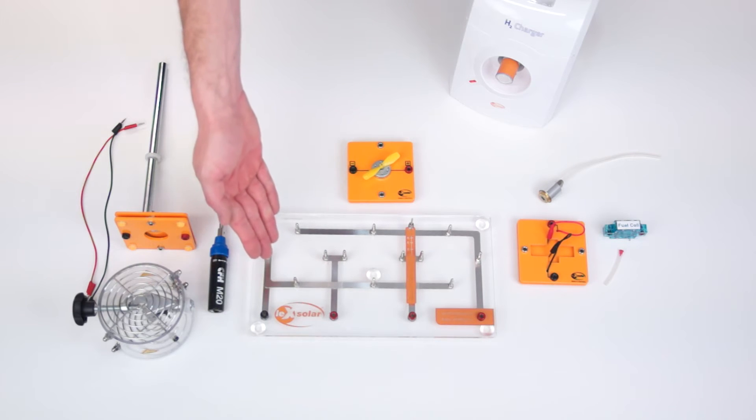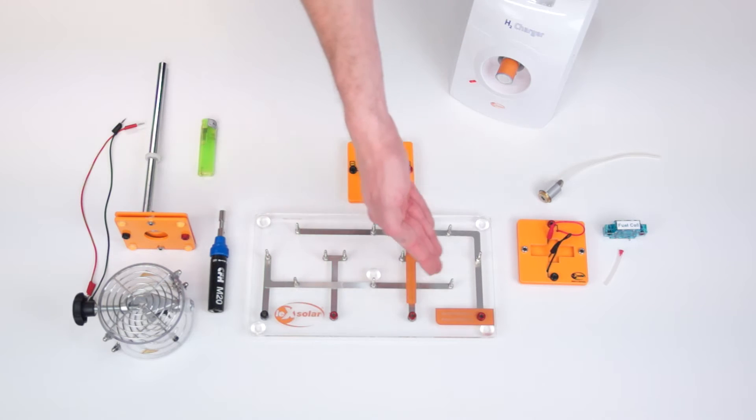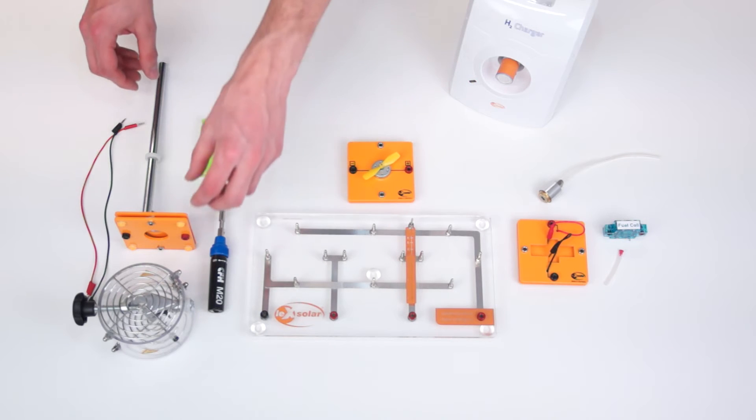For this we first need the base unit. It has slots for up to three modules which can be connected in series or parallel. On one side we attach the stand module to the base unit.